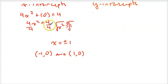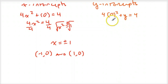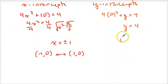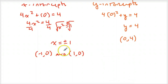For the y-intercept, we have 4 times 0 squared plus y equals 4, so that's 0 plus y equals 4, which gives y equals 4. So the y-intercept is the point (0, 4). Those are the x-intercepts and the y-intercept of this graph.